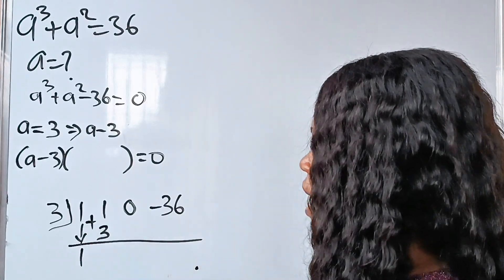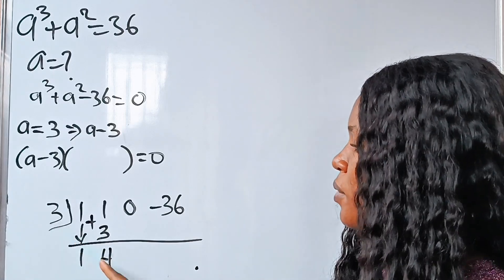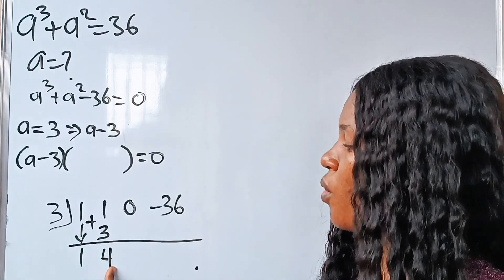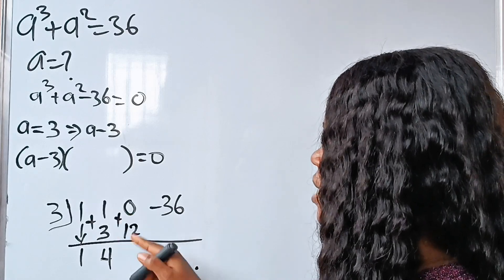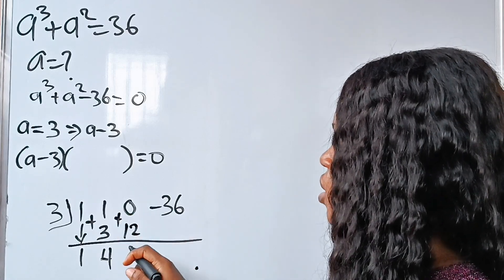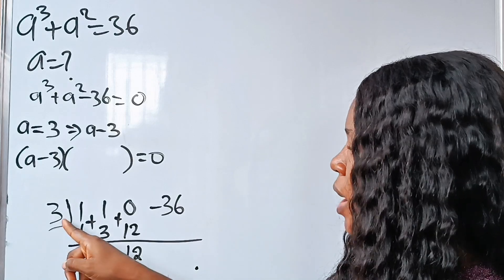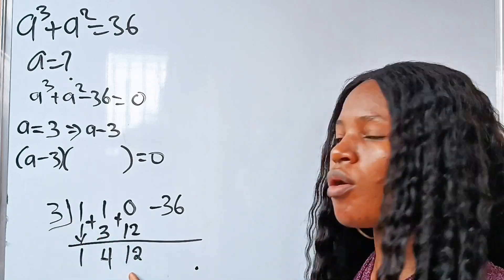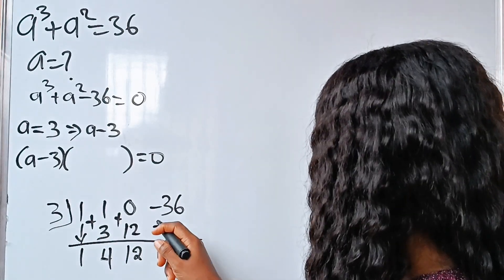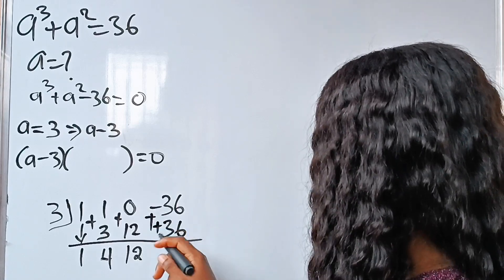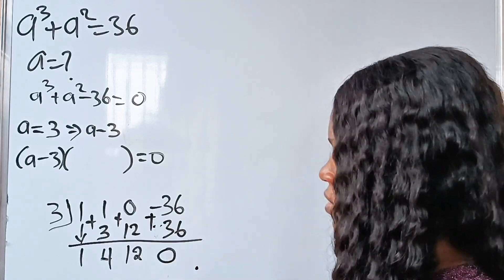We add 1 plus 3, which gives us 4. Then 3 multiplied by 4 gives us 12, so we write 12 here. We add 0 plus 12, which still gives us 12. Then we multiply 3 times 12, which gives us 36. We add minus 36 plus 36, and we get 0. We are done.